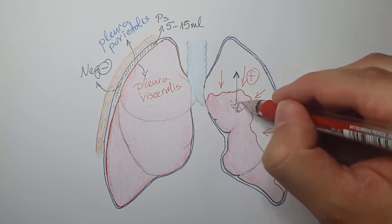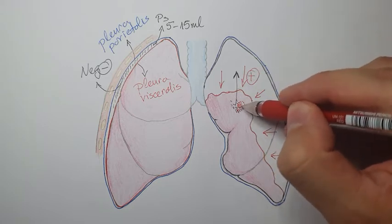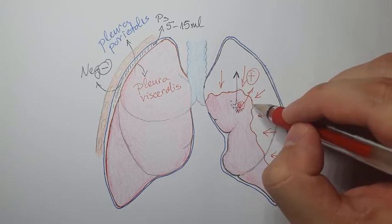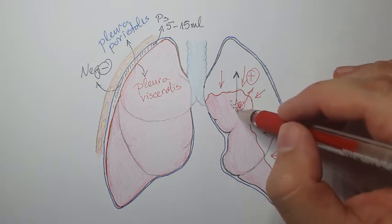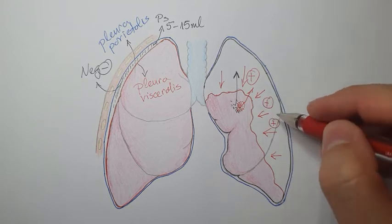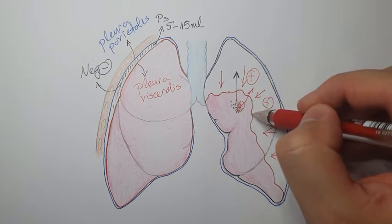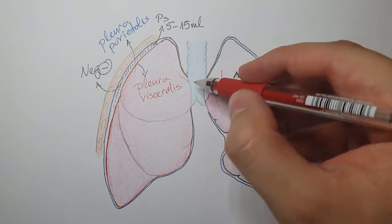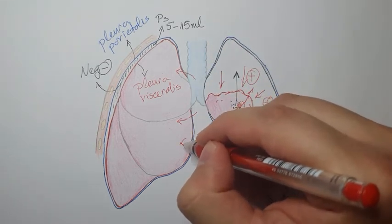In tension pneumothorax, the break in the lung acts like a one-way valve — air enters the pleural space on inhalation but cannot escape on exhalation. Pressure constantly builds up, collapsing the entire lung, and then pushing the heart, trachea, and great vessels to the opposite side, which can be life-threatening.